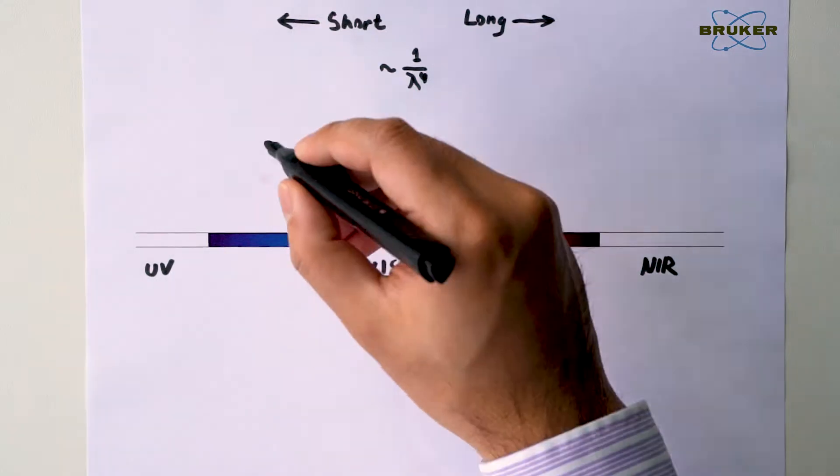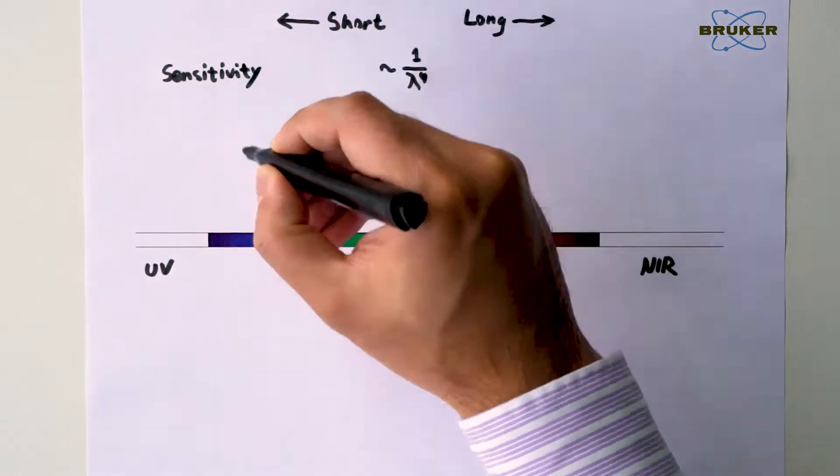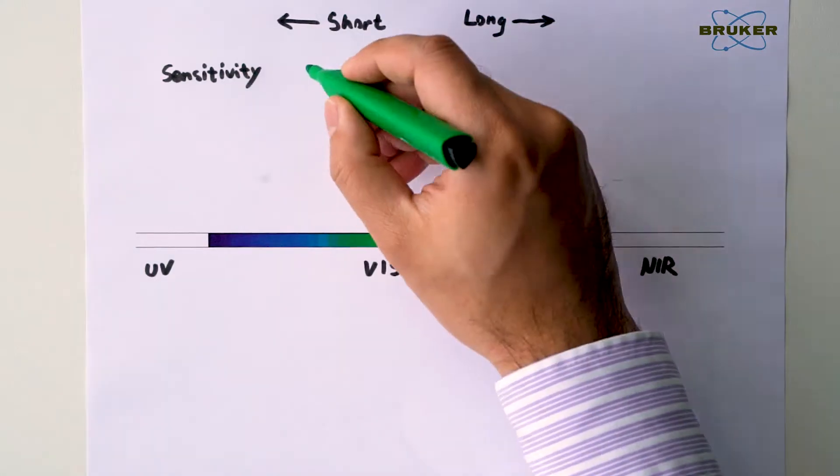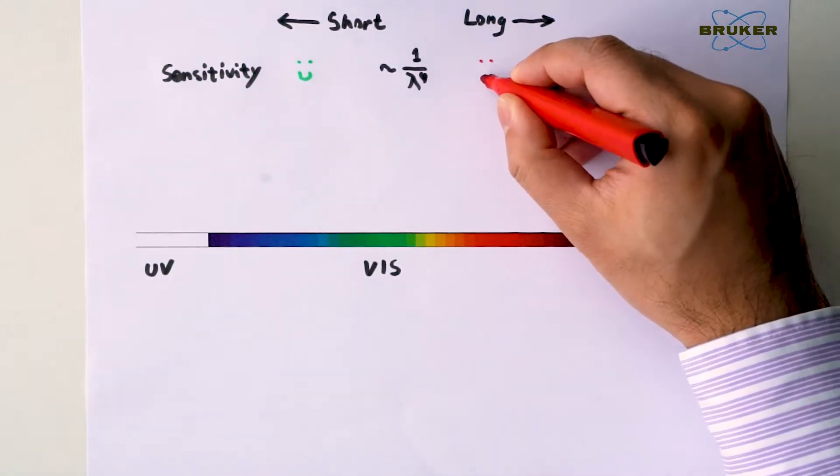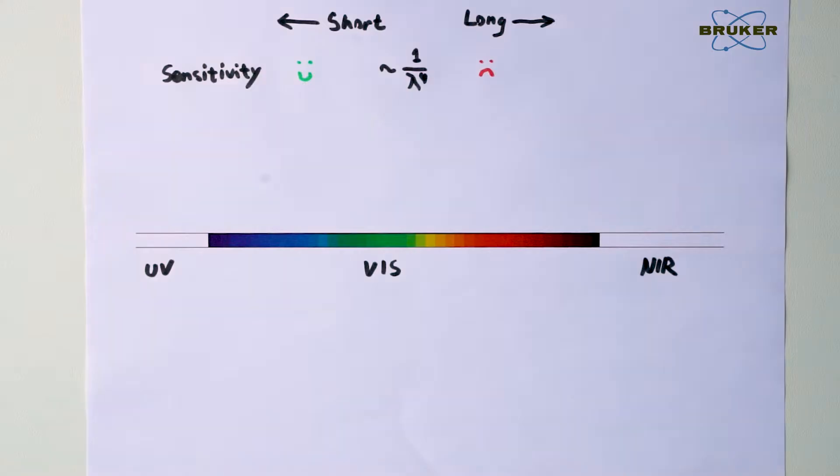In other words, the laser wavelength plays a key role in the sensitivity of our Raman experiment, and a laser of shorter wavelengths can provide us with much more Raman signal.